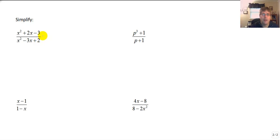So as you saw, our process is to factor first. So we will go ahead and factor x squared plus 2x minus 3. So our numerator factors to x plus 3 times x minus 1, and our denominator factors to x minus 2 times x minus 1.